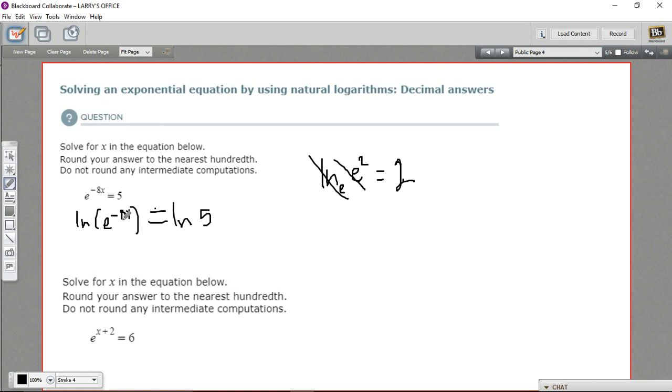Well, the natural log of e to the negative 8x, I just said the natural log and the e cancel out. That's just going to leave us this negative 8x. Another way to think about it is if I take the log base e, if I take this base e to what power will give me e to the negative 8x? Well, that's just negative 8x. So I get this equation negative 8x equals the natural log of 5.